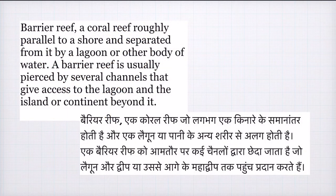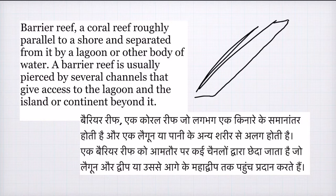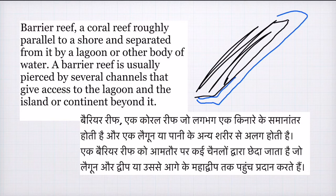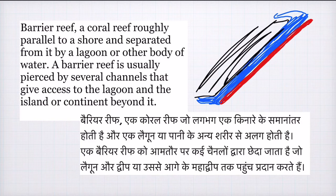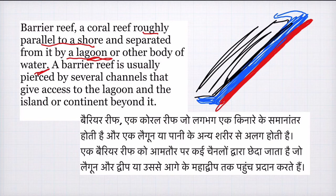Next is barrier reef. Imagine here is our coast ending — this is the piece of land — and beyond it the ocean starts. Some distance into the ocean, coral reef will start emerging from the water. There will be a strip of water between the land and the coral reef, which you call shallow water or lagoon. It will appear as if the coral reef is running parallel to the coast. So barrier reef is a coral reef which is roughly parallel to the shore and is separated by a lagoon or other water bodies.